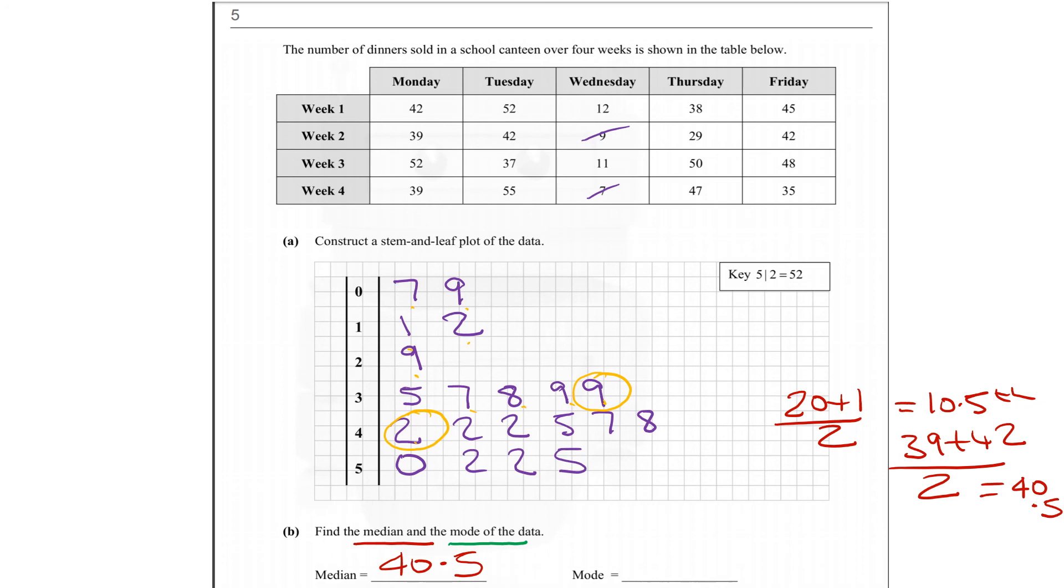The mode of the data, the mode is the number that occurs most frequently. Now we can see from our stem and leaf that 42 is the number that occurs most frequently. So there's two measures of average there, the median and the mode.